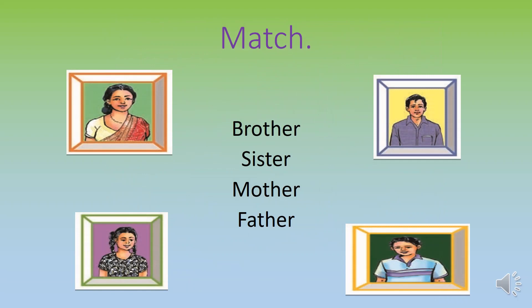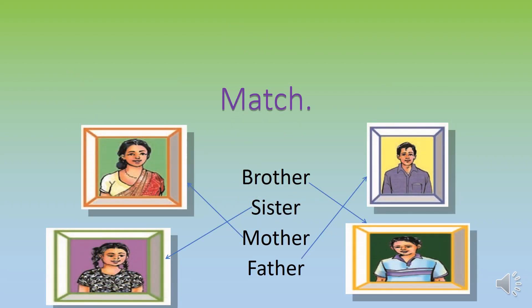Now, look at here. This is your workbook activity. What you have to do here? You have to match the family members. Okay, do it now. Now look at your answers. You know how to match your family members and you know about your family members.